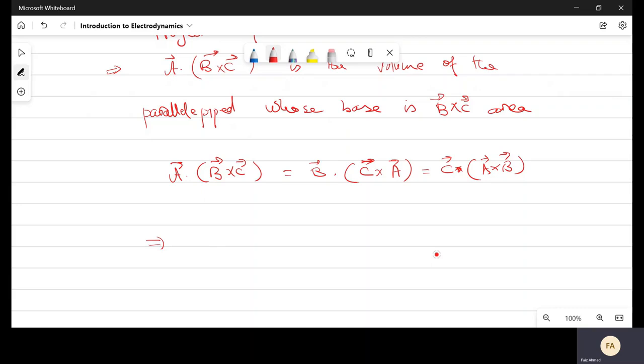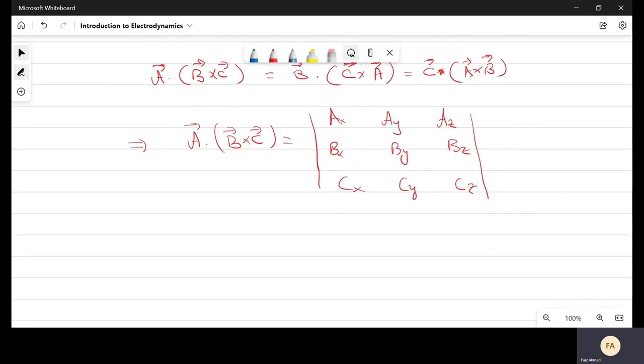A dot B cross C is equal to the determinant with rows AX, AY, AZ; BX, BY, BZ; CX, CY, CZ. So this is another way to express the scalar triple product.